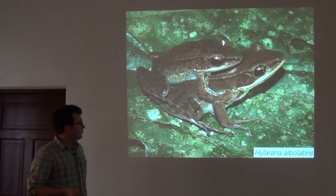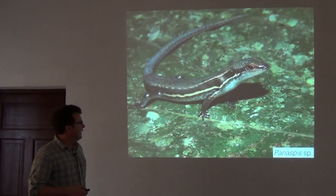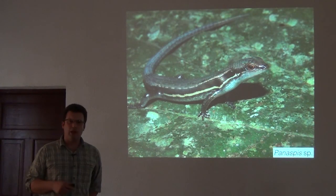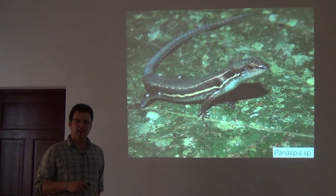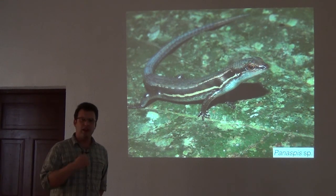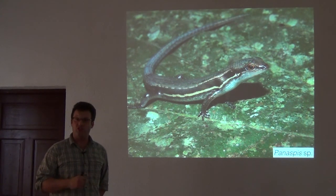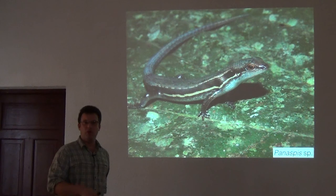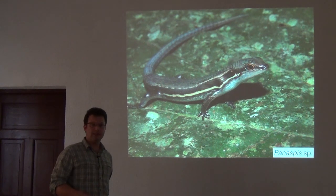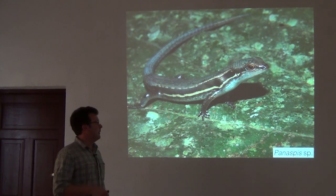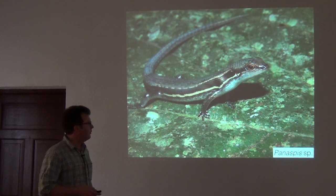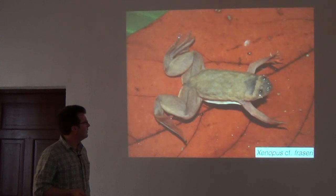There are also larger terrestrial frogs like Hylarana, and very small skinks. Sometimes we find these skinks when we're digging out stream banks looking for caecilians, or burrowed down under logs. We find Panaspis a lot of times when we're flipping rocks and logs near streams.